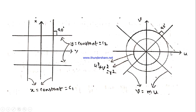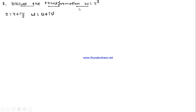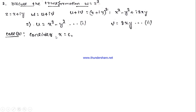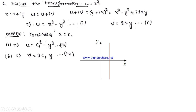Now let us discuss w = z². Taking z = x + iy and w = u + iv, we expand using (a+b)² to get w = (x + iy)² = x² − y² + 2ixy. So the real part is u = x² − y² and the imaginary part is v = 2xy. We will again consider two simple curves in the z-plane to see what happens in the w-plane.